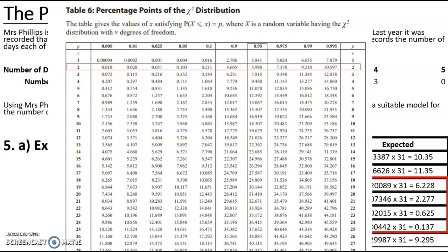With the reduced degrees of freedom, the critical value is updated from 11.070 down to 5.991.